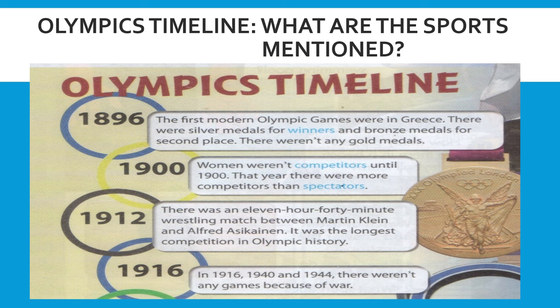Olympics timeline. 1896: The first modern Olympic Games were in Greece. There were silver medals for winners and bronze medals for second place. There weren't any gold medals. Winners here means Pemenang. 1900: